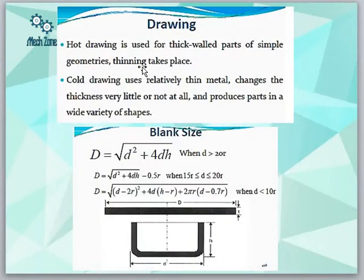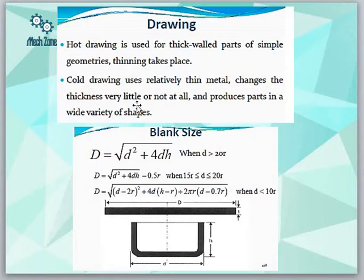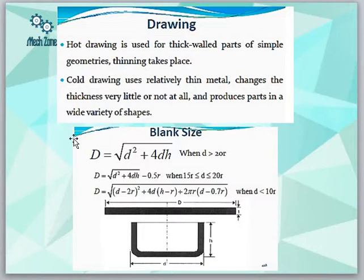Drawing is generally a cold working process — it is done below the recrystallization temperature. However, when the thickness of the plate is quite high, we use hot drawing, which is generally used for thick-walled parts and for making simple geometries. In cold working, relatively thin metal is used, and the change in thickness is either zero or very small, producing parts in a wide variety of shapes.